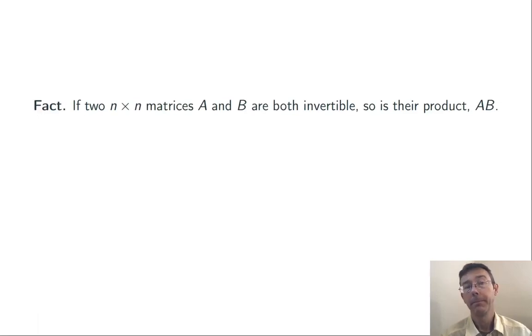Here's a handy property. If you have two invertible matrices, their product is going to be invertible as well. And there's actually a simple formula for the inverse of that product: (AB)^(-1) = B^(-1)A^(-1).